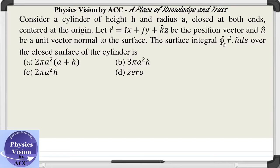Welcome back dear students to Physics Vision classes. The given question is: consider a cylinder of height h and radius a. This cylinder whose radius is a and height is h is closed at both ends, centered at the origin. The position vector r is given.